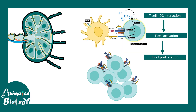Inside the lymph node, T cell activation occurs with MHC class 2-derived peptides presented to them via the dendritic cell. When dendritic cells present these peptides, T cells recognize them via T cell receptors. With a series of signaling cascades, T cells get activated and eventually proliferate, growing in number.